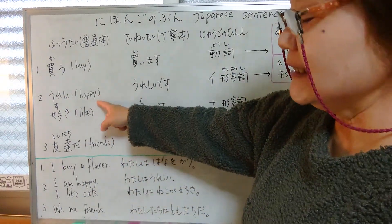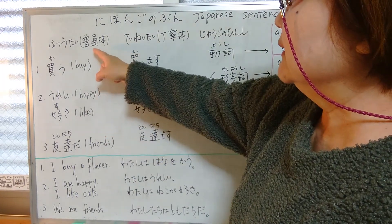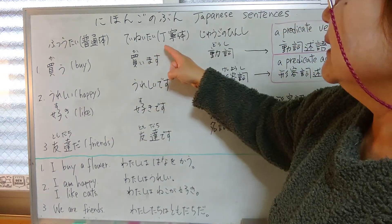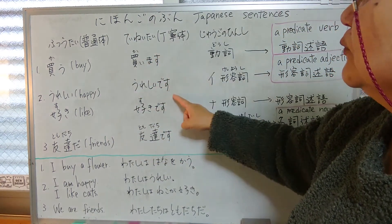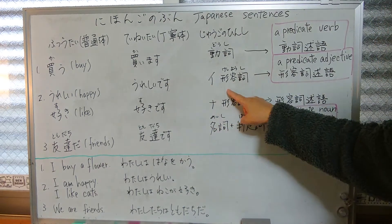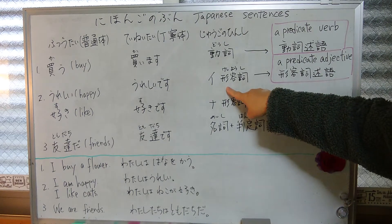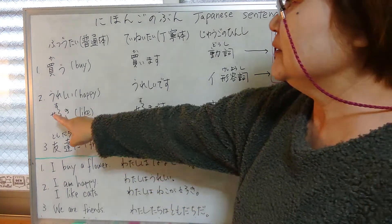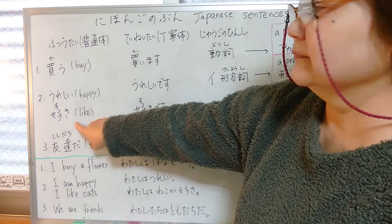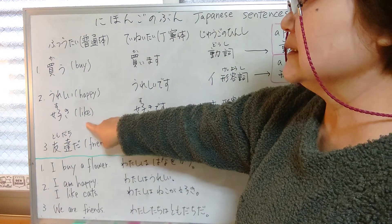Number two: ureshii — happy. The normal form is ureshii, and the polite form is ureshii desu. This is ii keiyoshi — an i-adjective. And also, suki — like. In English 'like' is a verb, but in Japanese it is na keiyoshi — a na-adjective.